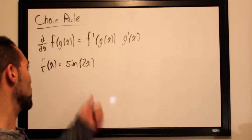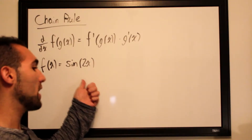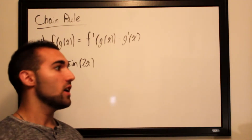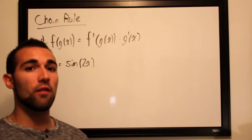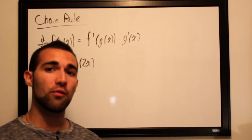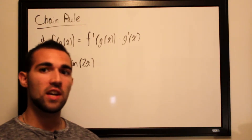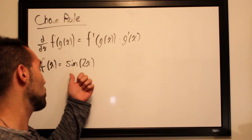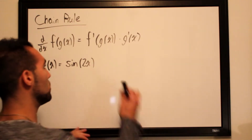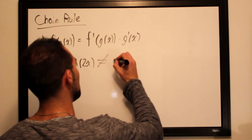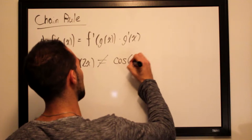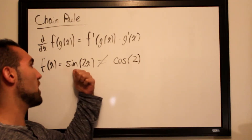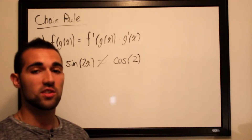Say we wanted to take the derivative of a function such as sine of 2x. We know how to take the derivative of sine of x, and we also know how to take the derivative of 2x. However, taking the derivative of a function trapped within another function is not as simple as taking the derivative of each constituent piece — so the answer would not be cosine of 2.